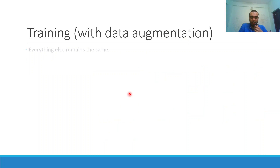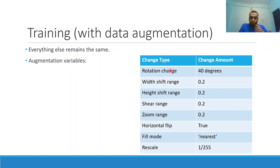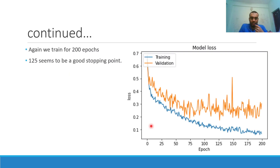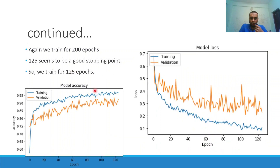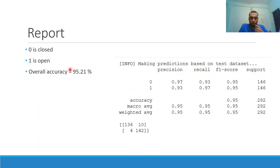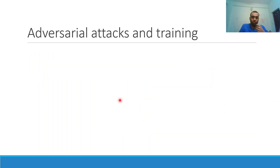Training with data augmentation keeps all other parameters the same. Augmentation variables include rotation, width shift, height shift, shear, zoom, and horizontal flipping. Training for 200 epochs, the optimal stopping point is around epoch 125, so we retrain for 125 epochs. The overall accuracy slightly increases to 95.21%. Again, 15 samples in total were misclassified, so there is a slight improvement. We now move on to adversarial attacks and adversarial training to test model robustness.